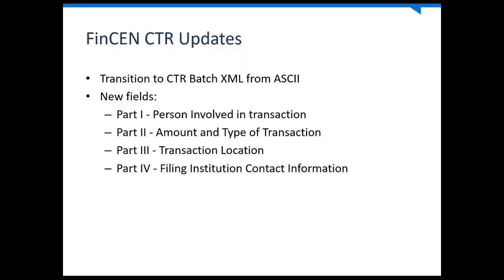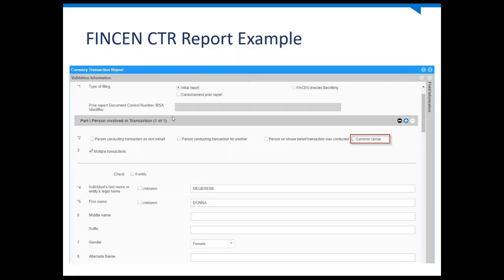For Part 2, Amount and Type of Transaction, they added a checkbox to reflect shared branching. Part 3, Transaction Location, added an unknown checkbox for the EIN, so if the customer doesn't have that information they can select the unknown checkbox. Part 4 is a brand-new section collecting contact information from the institution so that when reviewing reports, they can contact someone at the institution for clarification. In a nutshell, that's it for the CTR updates.